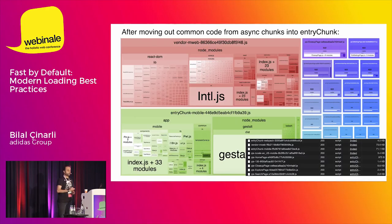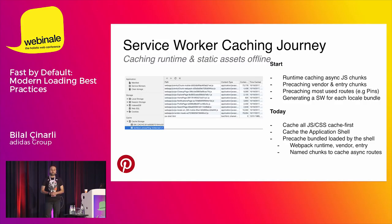After moving common code to the entry chunk, you can see more individual shapes and bigger entry modules. As a result, they reduced almost 90% of their code.